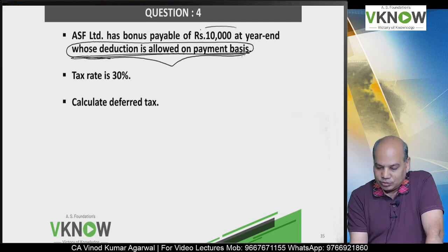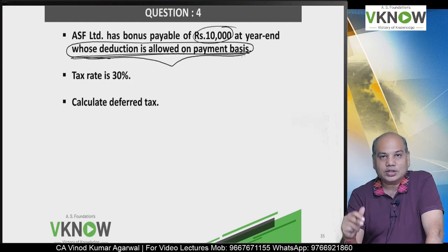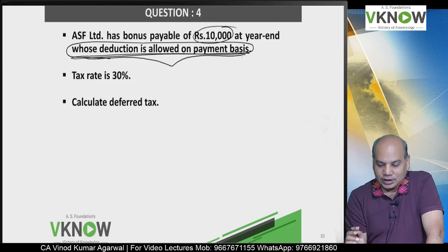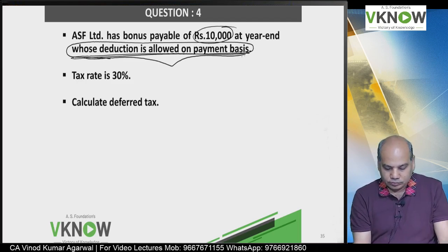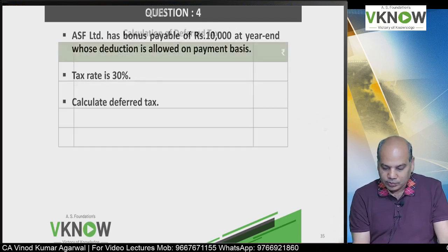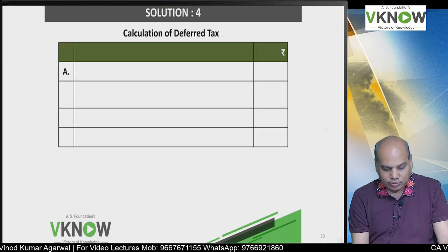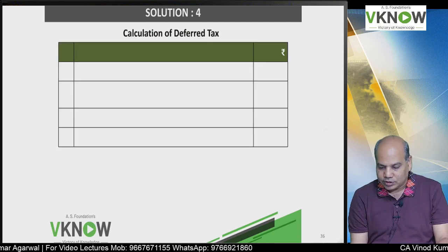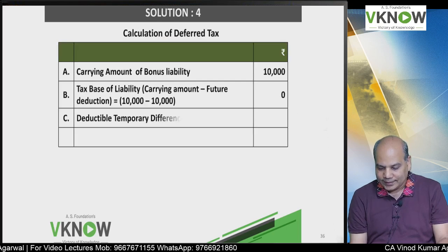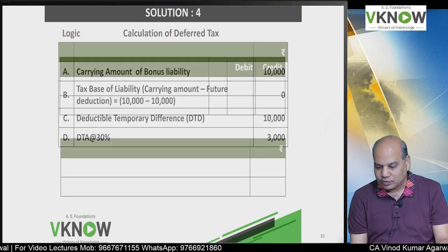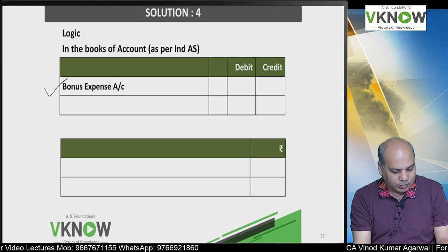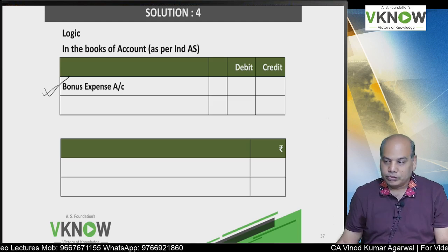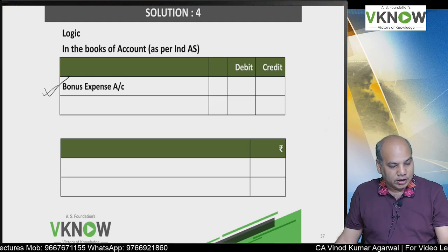Carrying amount is 10,000, deduction allowed in future 10,000. For understanding purpose, suppose we are passing entry in the books of account. What entry will pass? Write down below in your book the logic.